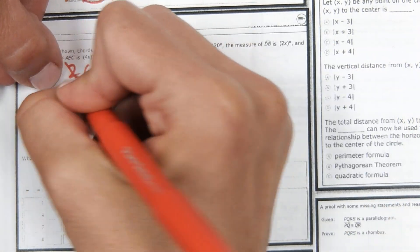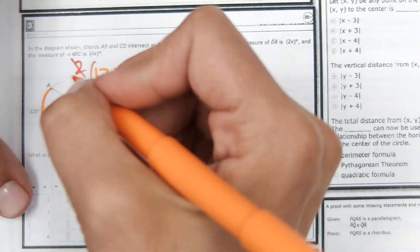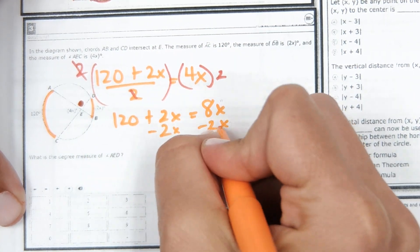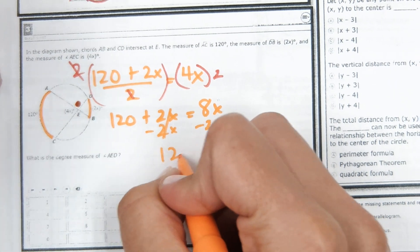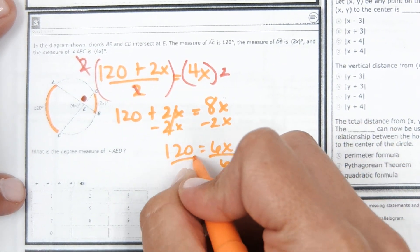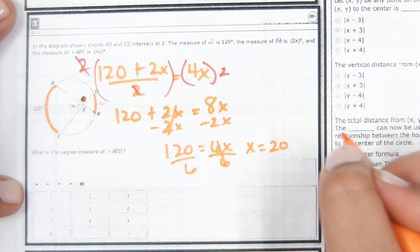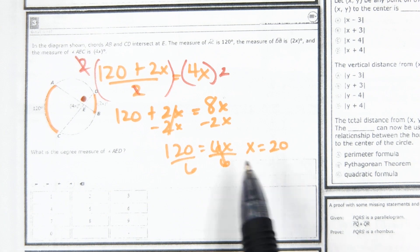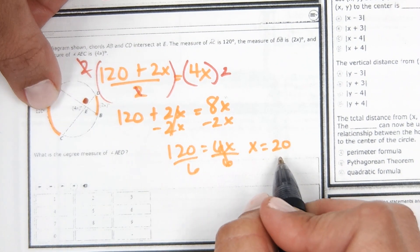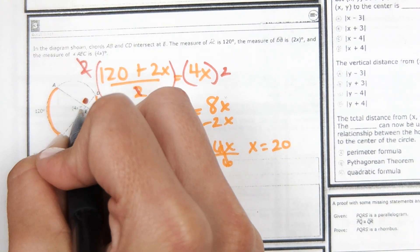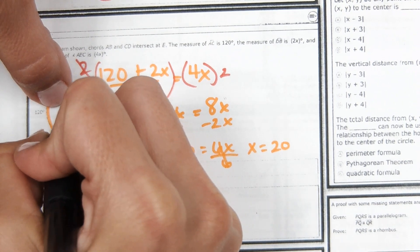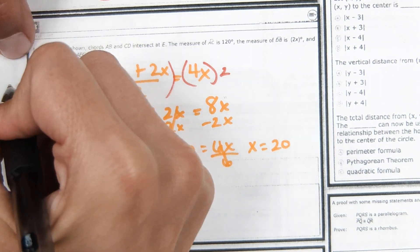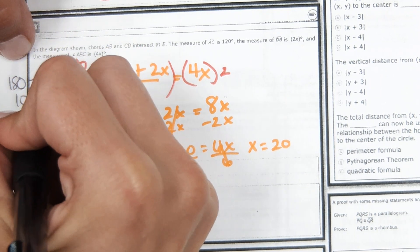Setting up the equation: 120 plus 2x, divided by 2, equals 4x. Multiplying both sides by 2 gives 120 plus 2x equals 8x. Subtracting 2x: 120 equals 6x. Dividing by 6 gives x equals 20. Since angle AEC is 4x, that's 4 times 20 equals 80 degrees. Angle AED is supplementary to that, so 180 minus 80 equals 100 degrees.